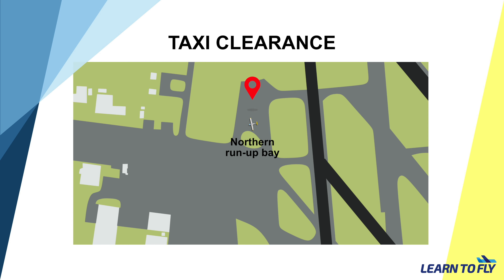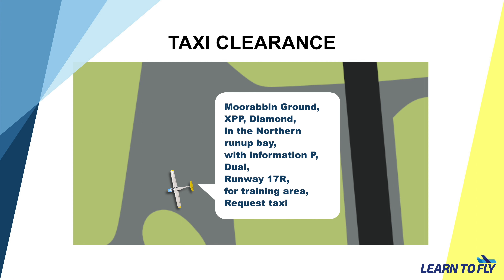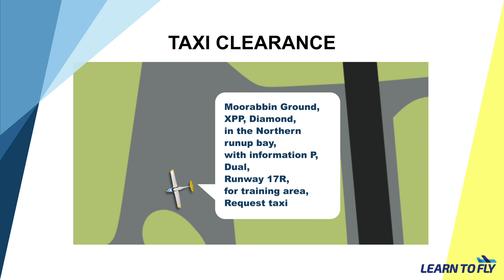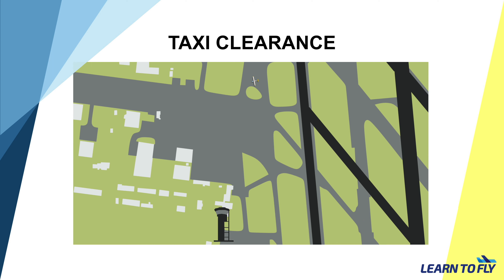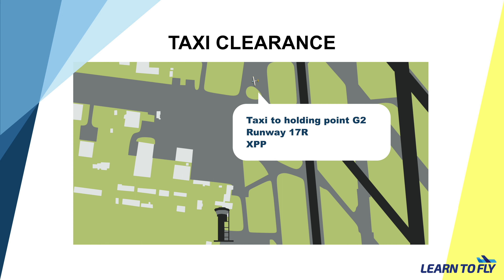Let's assume we have just started up at Learn to Fly's Apron, and we are taxiing to the Northern Run-Up Bay or the Southern Run-Up Bay to conduct some run-ups. After the completion of the run-ups, we can now request a taxi clearance to get onto the runway. According to the ERSA, the Moorabbin ground frequency is 134.25. Before making the radio call, we first have to listen to the ATIS to obtain the latest weather information. Every ATIS gets an alphabet as a code, and when there is an update, the alphabet changes to the next in alphabetical order. When making a radio call, include the ATIS alphabet to let ATC know that you have the latest ATIS.